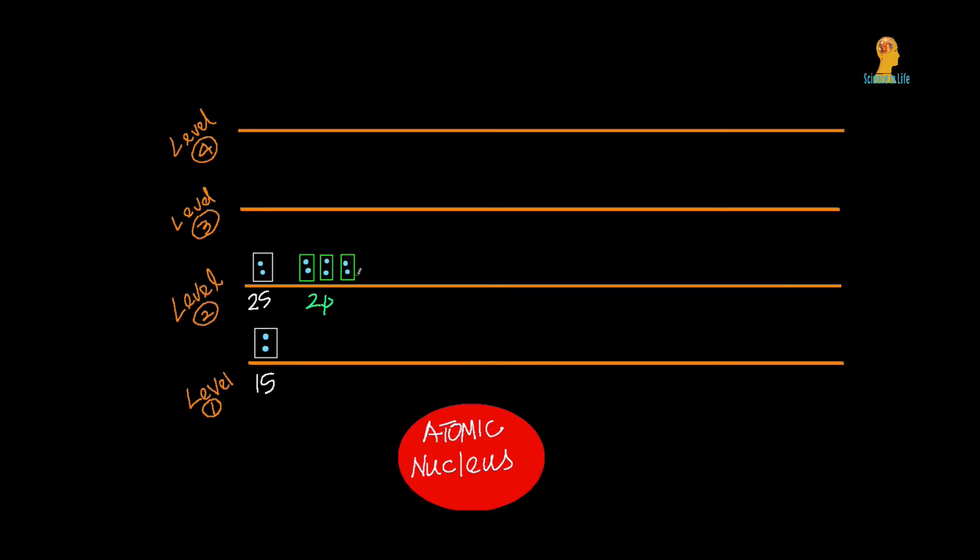The third shell has three sublevels: S, P, and D. The D sublevel can occupy ten electrons distributed into five orbitals.